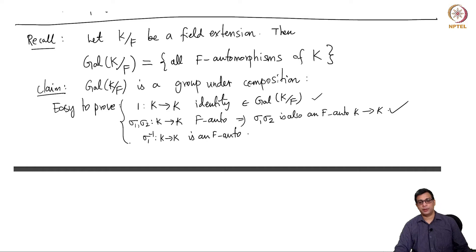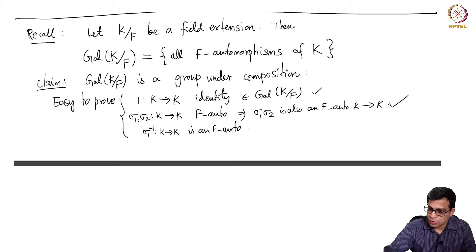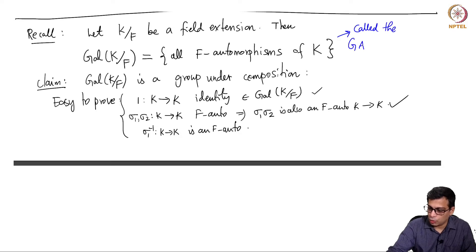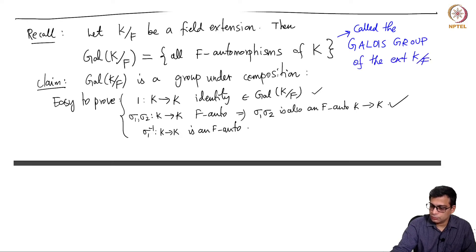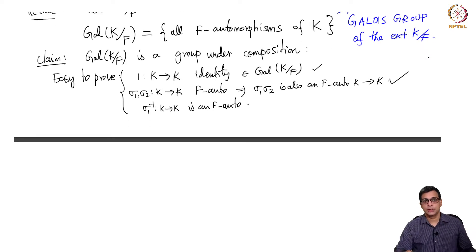It is not in general an abelian group — we will see that later because composition is not commutative and Galois groups can be non-commutative. This is called the Galois group of the extension. In the later part of this video I am going to give more examples, but now let me prove a corollary to the previous theorem which is actually an important proposition for us.